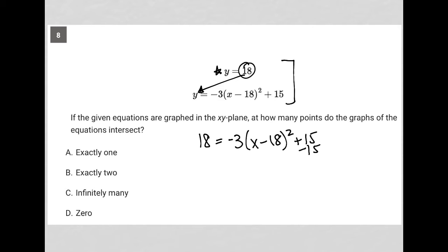I can continue to simplify this by subtracting 15 on both sides of the equation, leaving me with 3 equals negative 3 times x minus 18 squared. Dividing both sides by negative 3, that would lead me to having negative 1 is equal to x minus 18 squared.